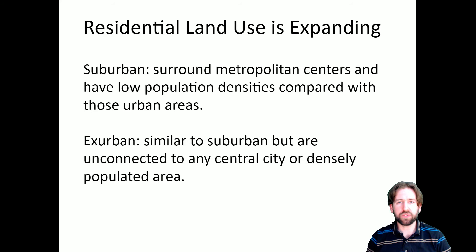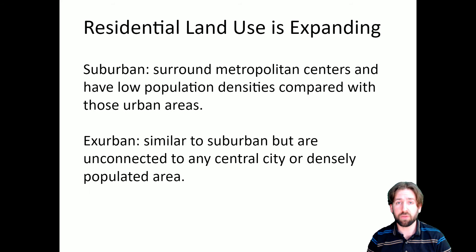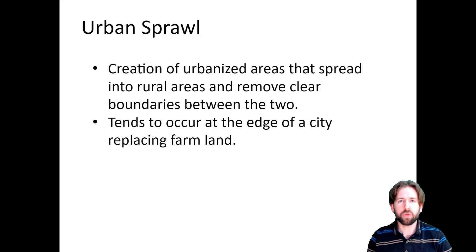In addition to the lands we are using for resources, we also have to be concerned about residential land. Our residential land use has been expanding due to our increasing population. Two words we should be familiar with: suburban — surrounding metropolitan centers, with low population densities compared to urban areas — and exurban, which is similar to suburban but unconnected to any central city or densely populated area. We also have to be considerate of urban sprawl: the creation of urbanized areas that spread into rural areas and remove clear boundaries between the two. It tends to occur at the edge of a city, replacing farmland, as city centers grow outward.